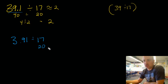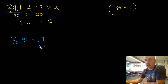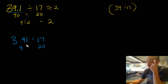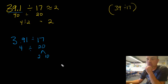Let's round 17 to 20. And 3 and 91 hundredths — what can we round that to that would be easy to divide by 20? We're going to use 4 instead of 40, because this number is 10 times less than before. So let's look at 4 divided by 20. We can decompose 20 into 2 and 10.